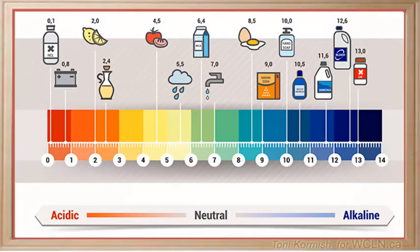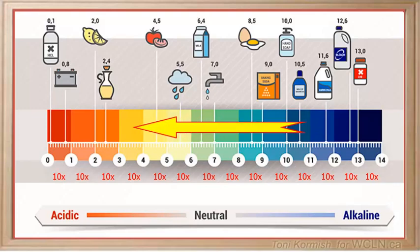The pH scale is based on a logarithmic scale that ranges from 1 to 14. A logarithmic scale is a scale based on multiples of 10. So each number on the pH scale represents 10 times more hydrogen ions as we move from the right to the left on the pH scale.